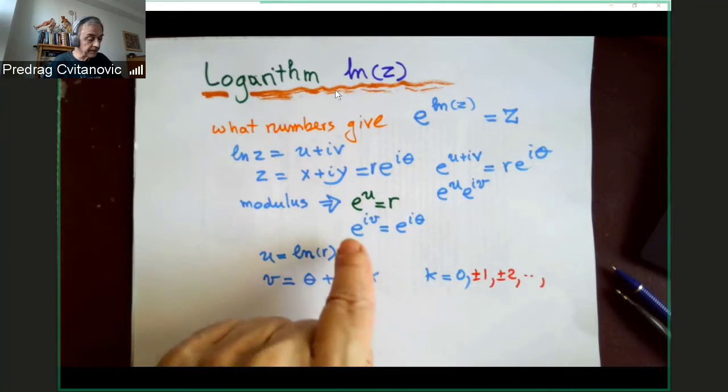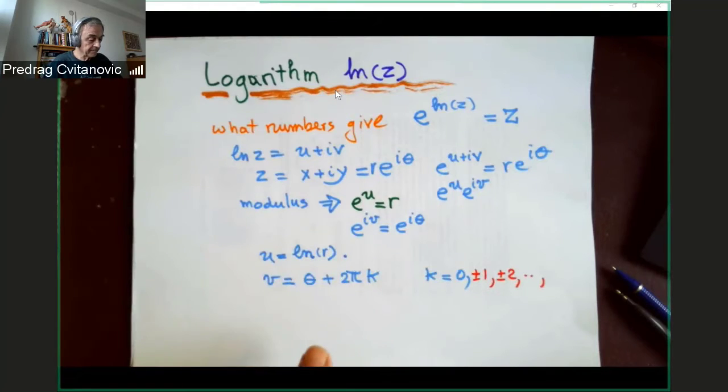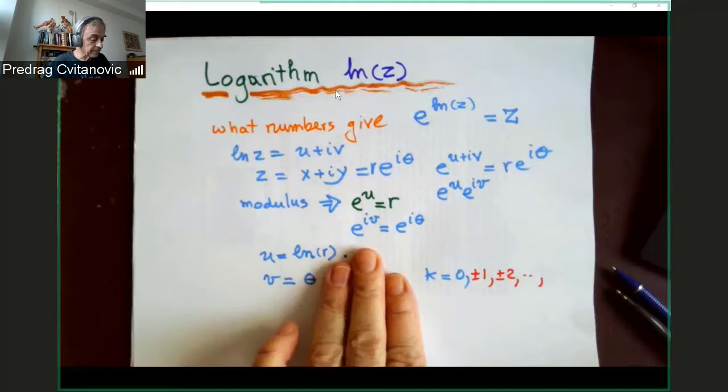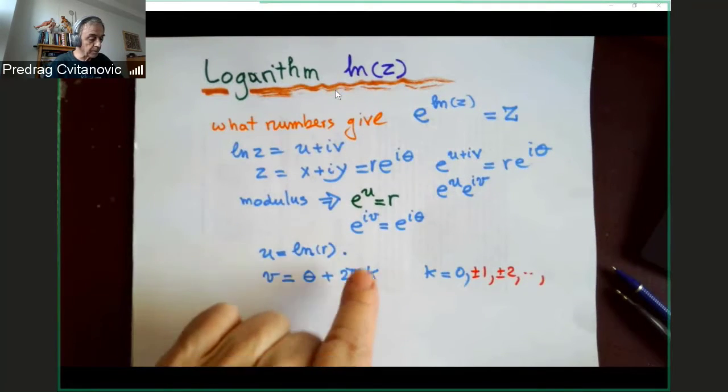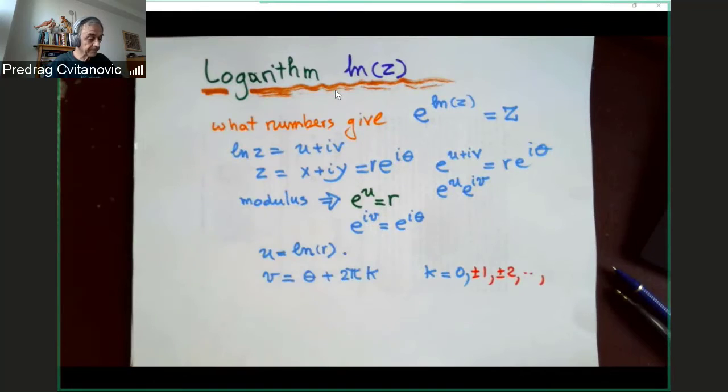And that has infinitely many solutions, because not only v equals theta is solution, but if I add to v any multiple of two pi, integer multiple, that produces one in the exponent. So I'm allowed to produce infinitely many solutions, v all of them that satisfy this relation.